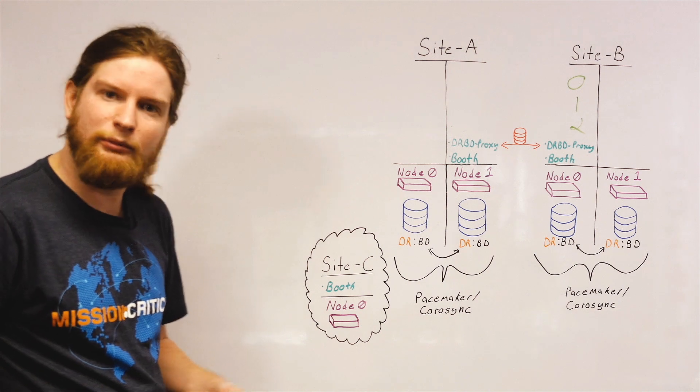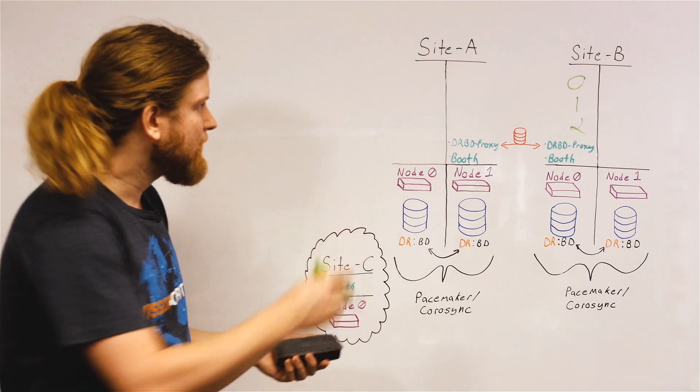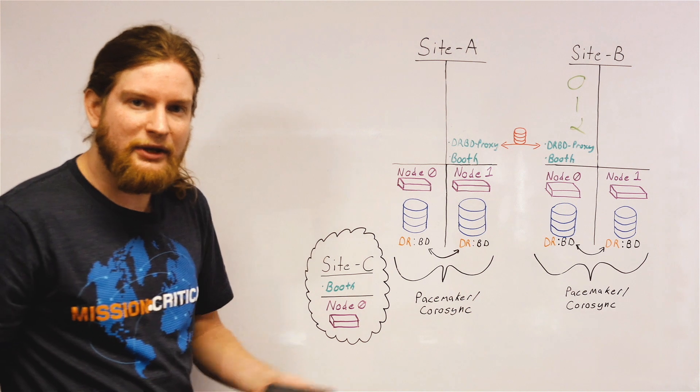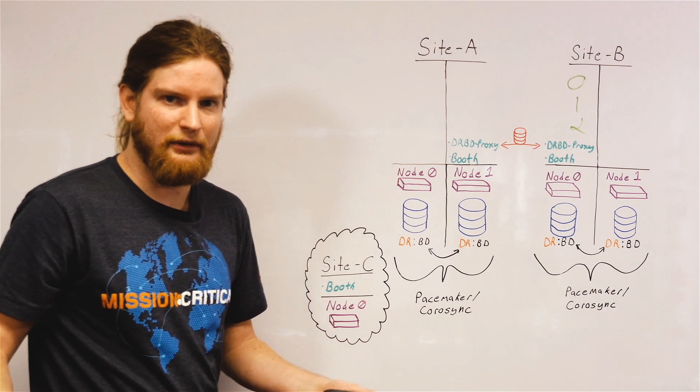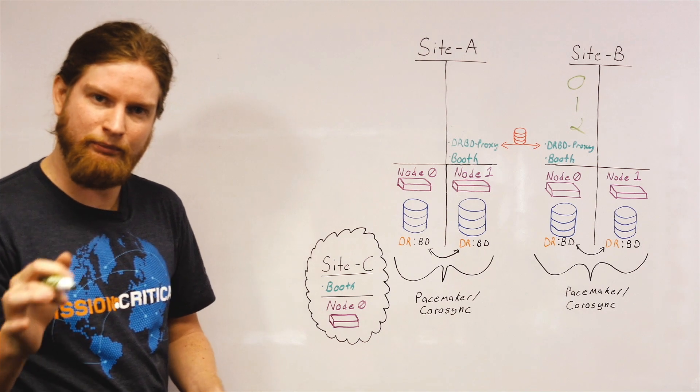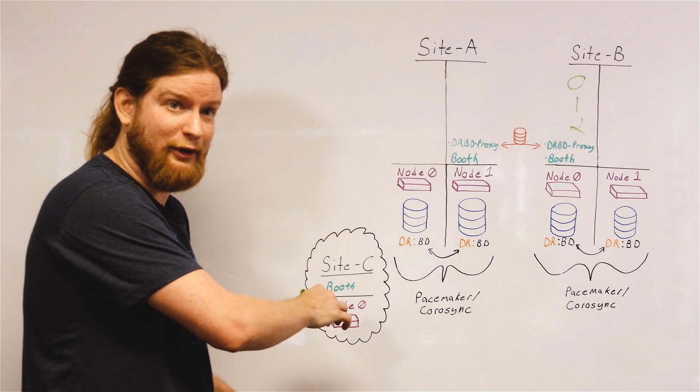You can't make a decision between two sites, because if you lose one, for example site A, and site B has no idea what's going on, it's sitting there alone. You can't make a decision. You need some other node to break the tie. Site C is that node.